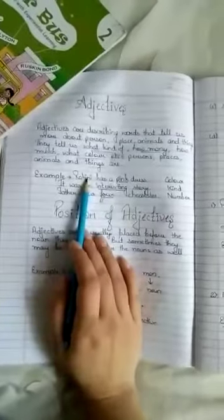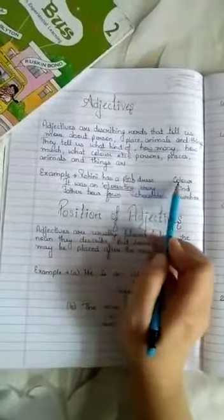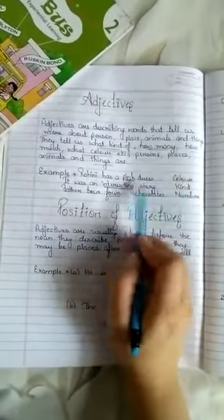For example, Rohini has a pink dress. Pink is what? It's a color.